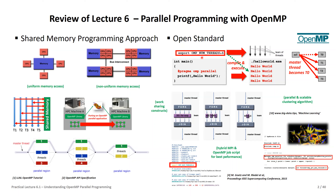If OMP_NUM_THREADS is set to four, the parallel region will be executed four times as a team of threads, resulting in four 'Hello World' outputs. A key message is that the master thread always becomes thread zero — it's not just a manager waiting for others to complete. It becomes task zero and actively helps in the parallel region alongside all the other threads.